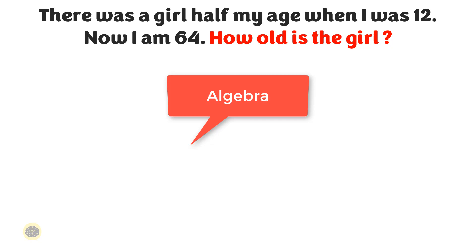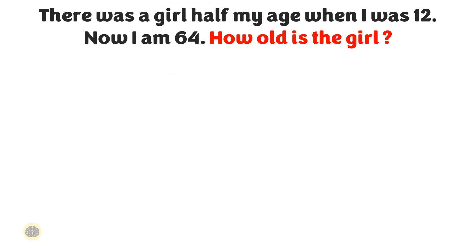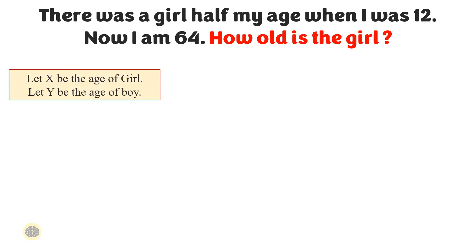To solve the problem, we need to use algebraic equations to relate the different pieces of information given in the problem. We are given that the girl's age was half the age of the person when he was 12 years old. Let X be the age of the girl and let Y be the age of the boy. As per the question, there was a girl of my age, so the equation can be written as Y equals 2X.